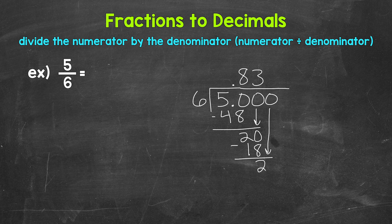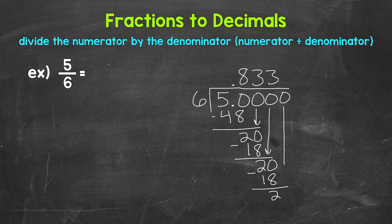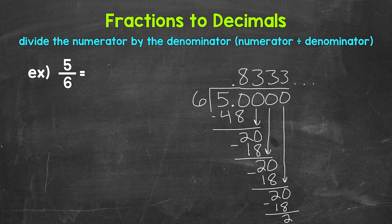Let's use another zero to continue on — we get 20 again. 20 divided by six is three. Three times six is 18. 20 minus 18 is two again. You may start recognizing a pattern here — this is going to give us a repeating decimal. If we use another zero and bring it down, we get 20 again: 20 divided by six is three, multiply three times six is 18, subtract, and then another two. So this is going to continue on forever — these threes repeat and continue on forever. So we can write this repeating decimal as 0.83.